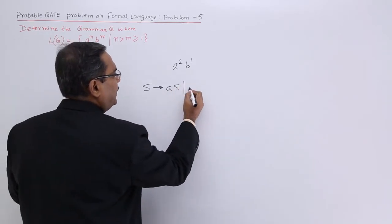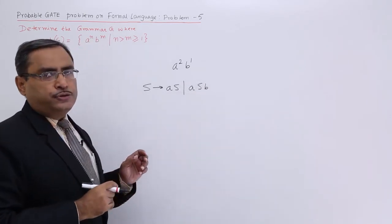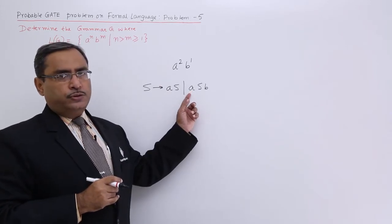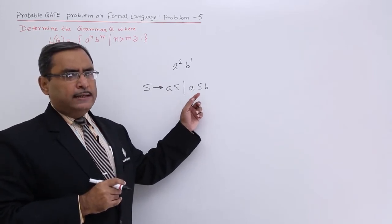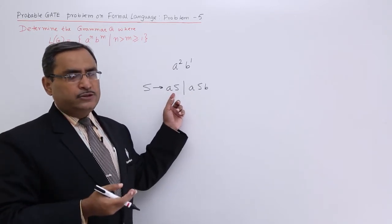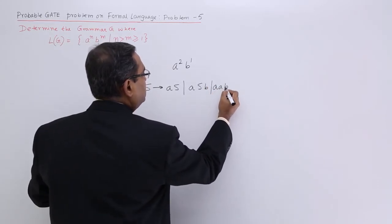Next, if I produce one b, then at least one a should be produced. That will balance the number of b and a. Here a can be of multiple number of times as we require, and the minimum string which can be produced is this one.